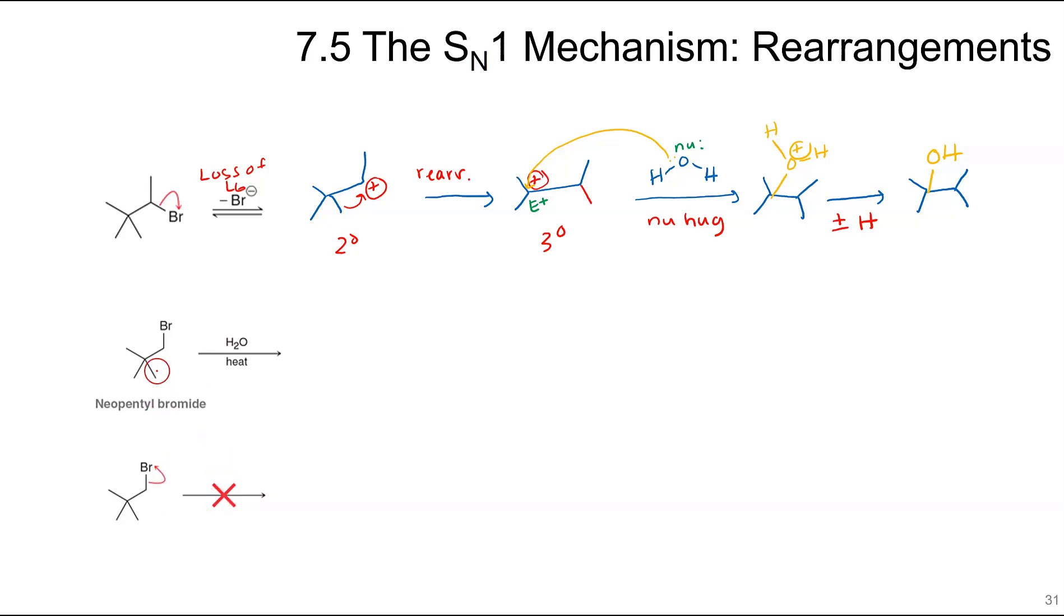So this is an interesting one. These are both neopentyl bromide. And this does not happen. We do not actually get loss of the bromide here because it would otherwise form the carbocation that is primary, which is disfavored. But what happens is the methyl group can anticipate that wanting to leave and just moves over initially. And then you form that carbocation. And this alcohol here.